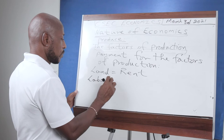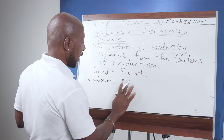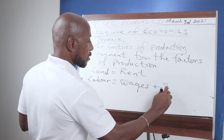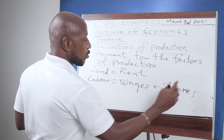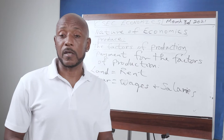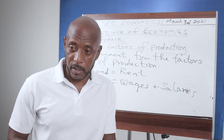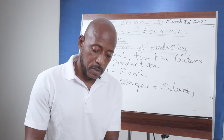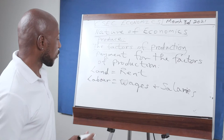The reward for labor is referred to as wages and salaries. When you work, you get paid as a human being, as a human resource. Some people get paid daily, some by the hour, some by the week, every two weeks, or every month. The payment for labor is referred to as wages and salaries, and these are paid to the workers.